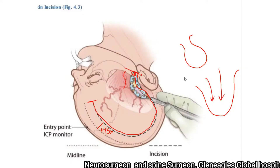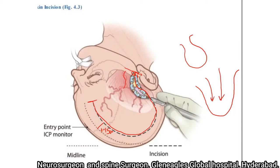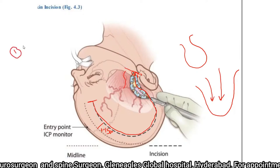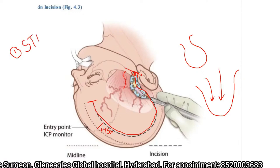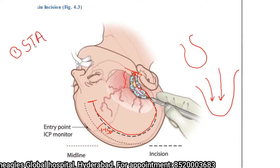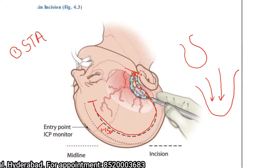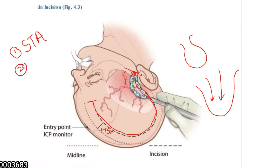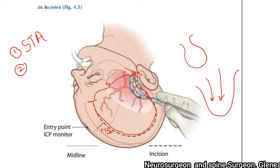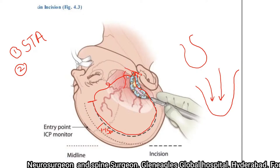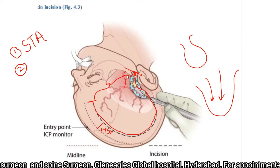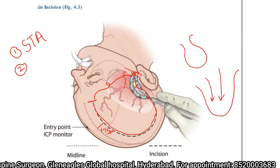To ensure the vascularity of the flap, we take two or three precautions. First, we try to preserve the superficial temporal artery, achieved by palpating it in front of the tragus. Second, we ensure that the base of the flap — that is, the width — is as wide as possible. Once the incision is developed, hemostasis is achieved.